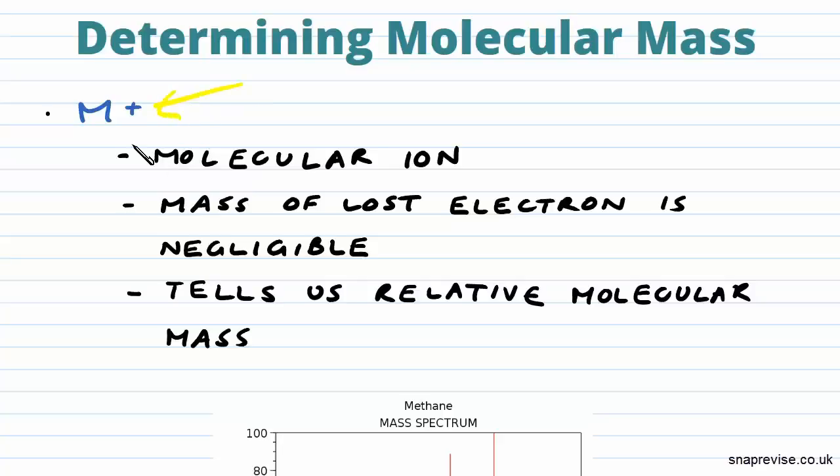Here M+ we call this our molecular ion - so our molecule has lost an electron to become this. Now the mass of the lost electron is negligible, we can ignore it, and what that means is that the molecular ion will have a molecular mass equal to the relative molecular mass of the compound. It will tell us the relative molecular mass of our compound.